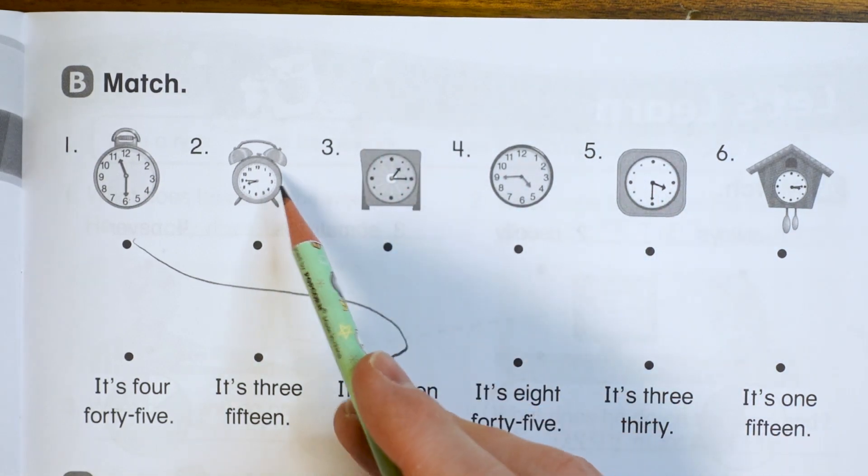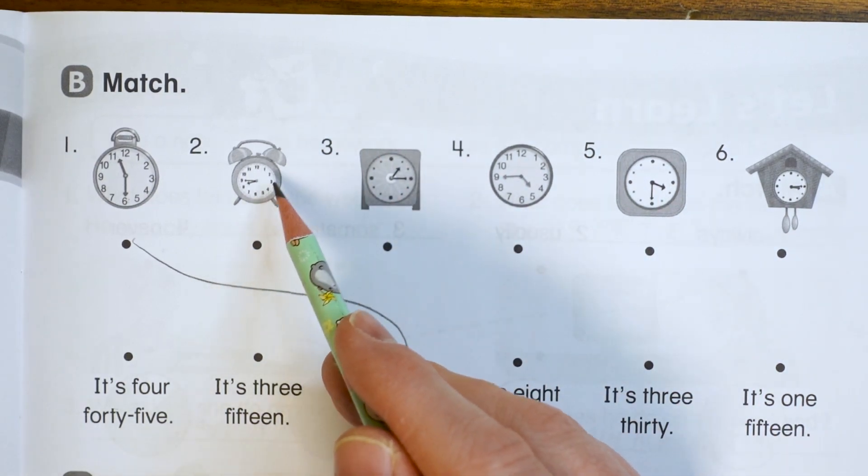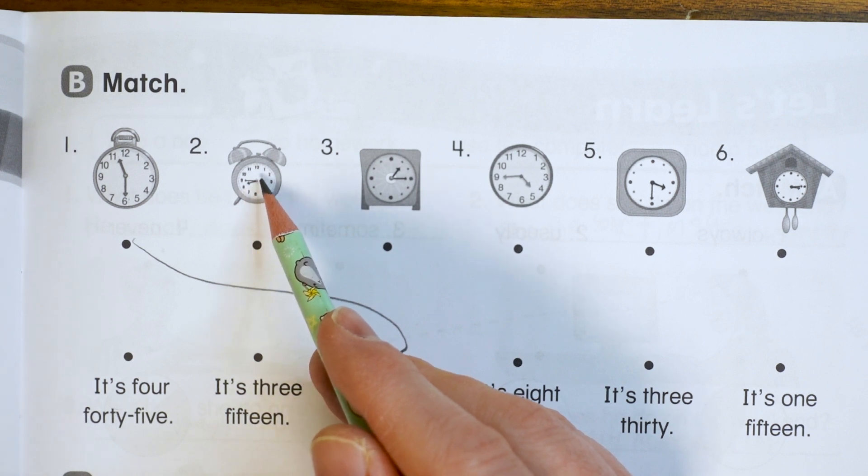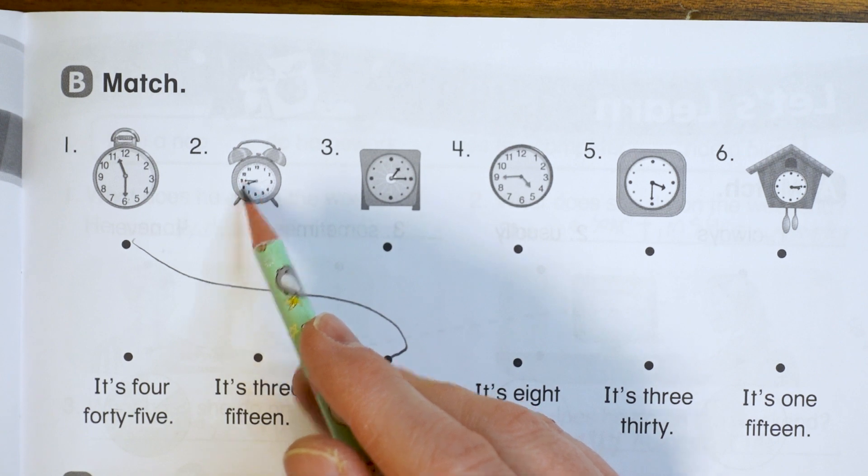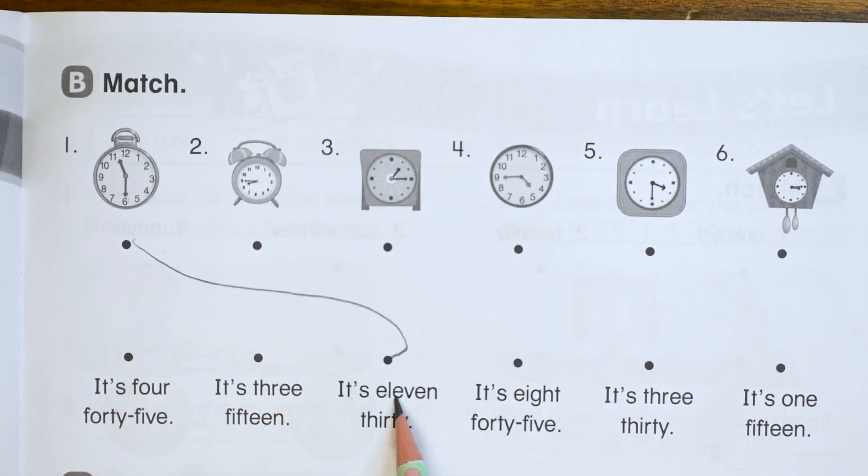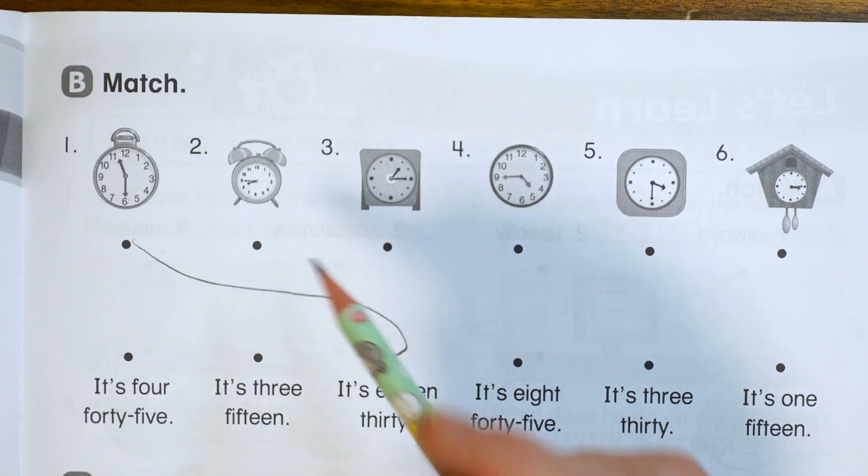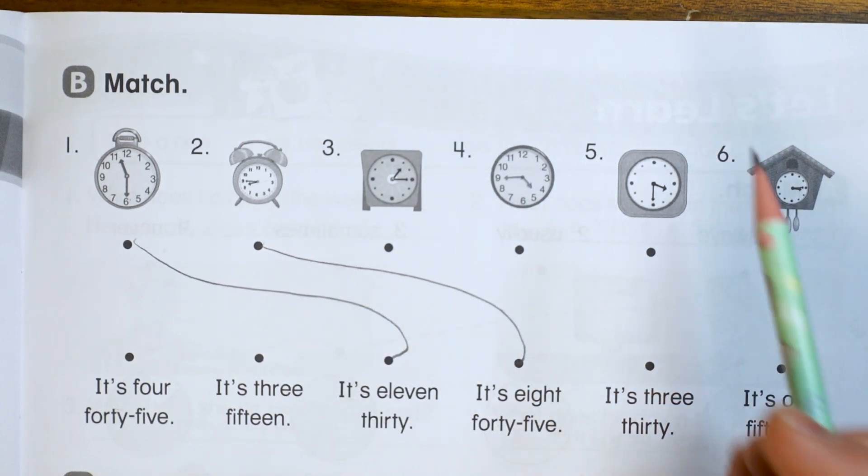Okay. The next one is very small, but the hour hand is pointing at the eight. So I know it's eight and the minute hand is pointing at the nine, which is 45. So we're looking for 8:45. Here it is. It's 8:45.